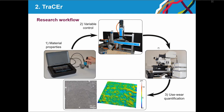The main research workflow in our lab includes three main steps. First is material properties — we try to investigate and characterize the different raw materials. Second is variable control, which is a main topic in our experiments. Third is useware quantification. It's a circular workflow: we address raw material properties, conduct experiments, do useware quantification, and the results drive us back to the initial point.